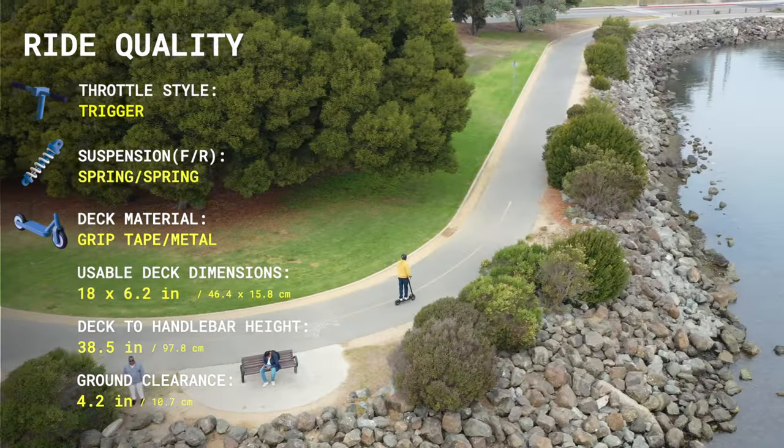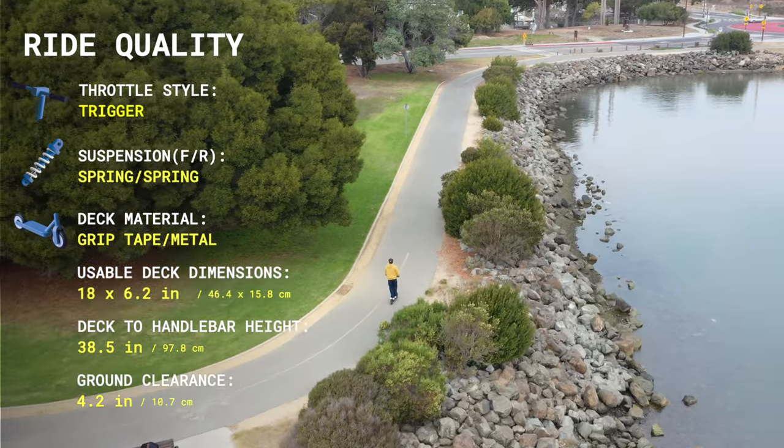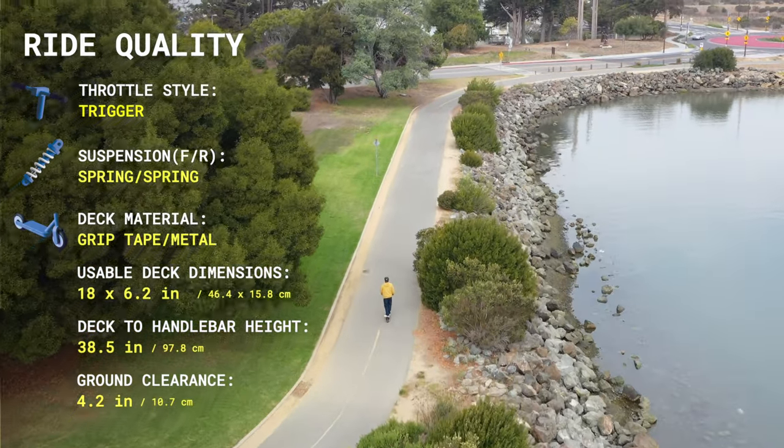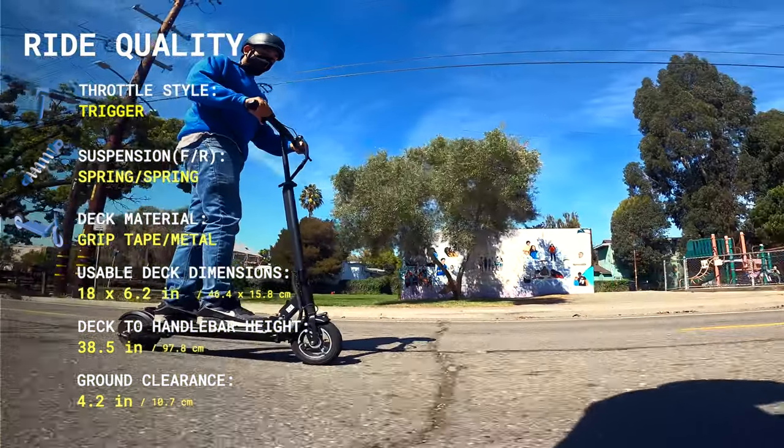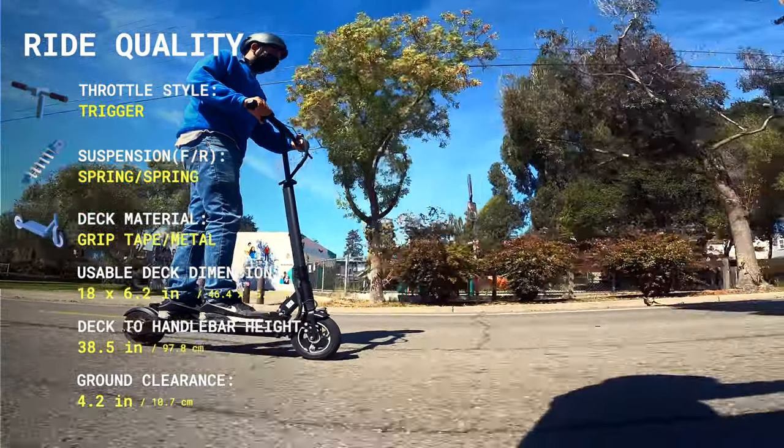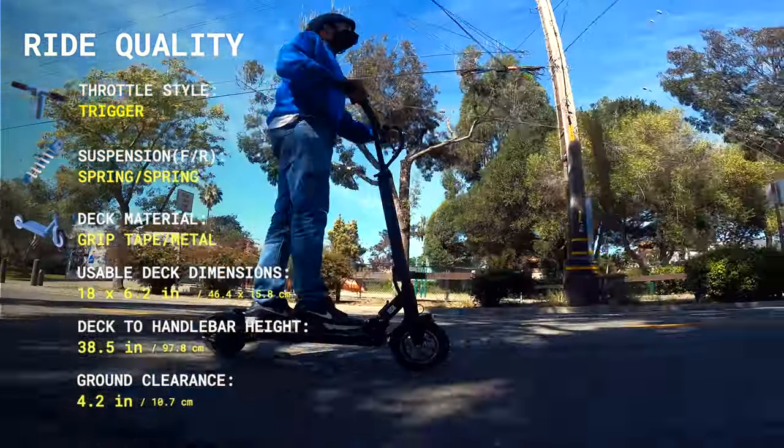The ride quality is another thing that makes the Horizon a best seller. Whether you're riding on nice smooth pavement or have crappy roads like we do here, the ride is fairly smooth. That's because it comes with full suspension, a rare feature at this price point.